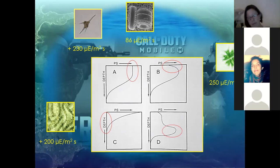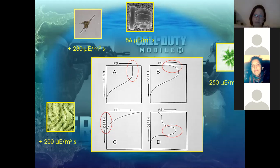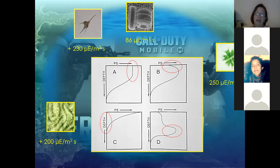En el último perfil vemos un pico de fitoplancton en profundidad, que es típico de los ambientes oligotróficos o ultraoligotróficos, en donde hay luz pero no hay nutrientes. Entonces la producción fotosintética no se da en superficie, sino que se da más bien en la base del epilimion, donde se da cierta llegada de nutrientes del hipolimion, o por lo menos donde la concentración de nutrientes es un poquito mayor que en el epilimion, en donde no hay nada de nutrientes disponibles.